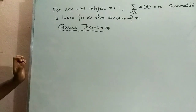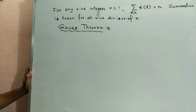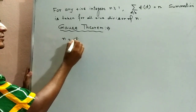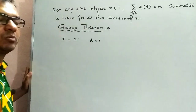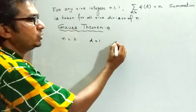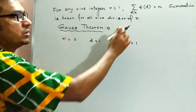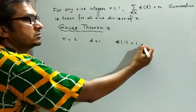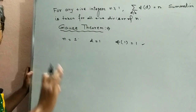Now we go to the proof of the property. First, we let n equal to 1. Then the only divisor of 1 is 1, and we know that phi(1) equals 1. That is, the summation of phi(d) equals n. So if n equals 1, then the proof is trivial.